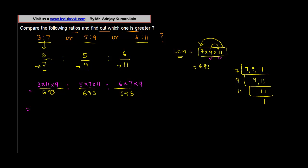11 into 9 gives you 99, 99 into 3 gives you 297. 5 into 7 is 35, 35 into 11 is 350 plus 35, which is 385. 6 into 7 is 42, 42 into 9 is 420 minus 42, or 378.